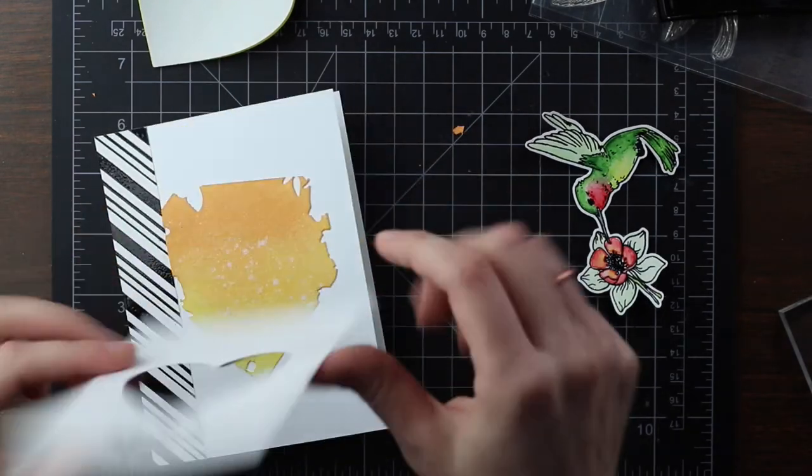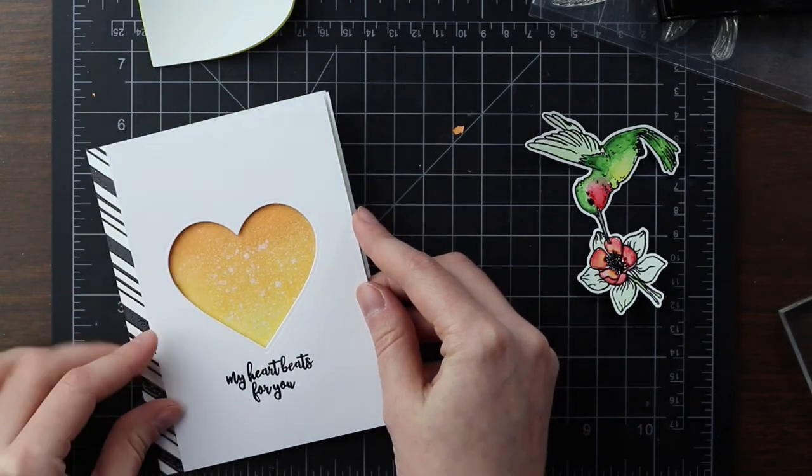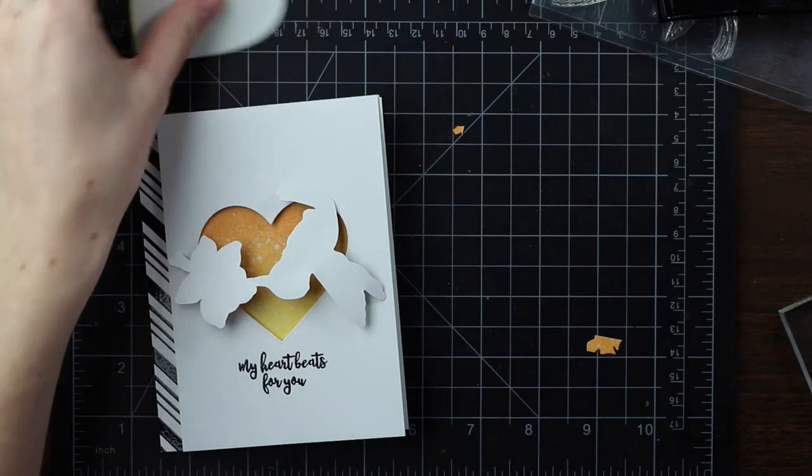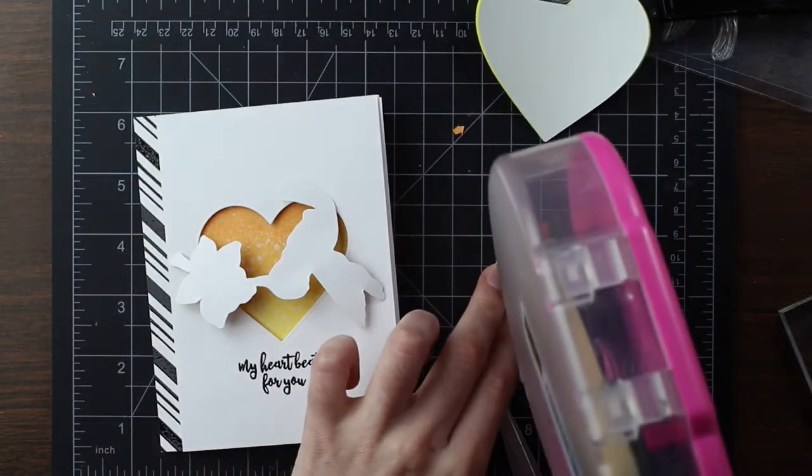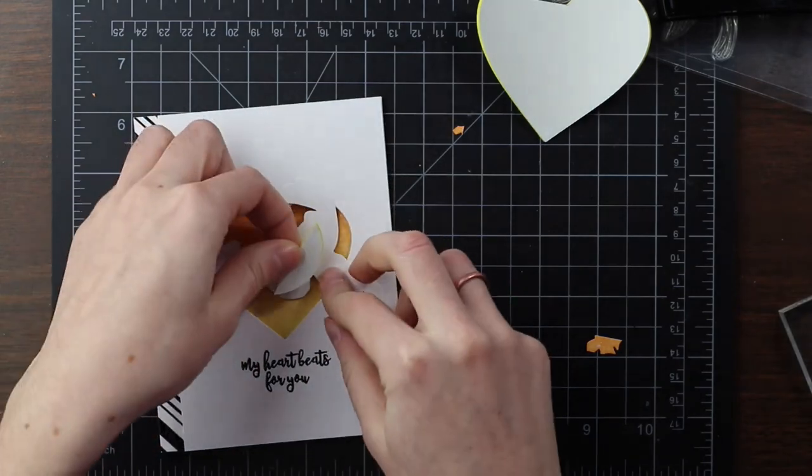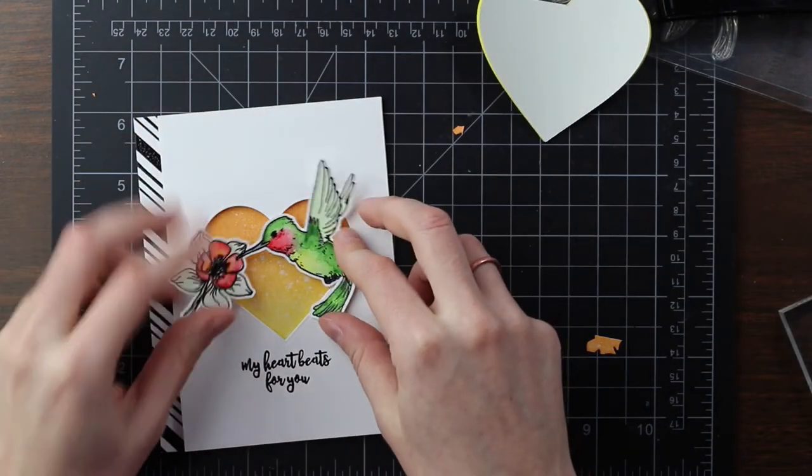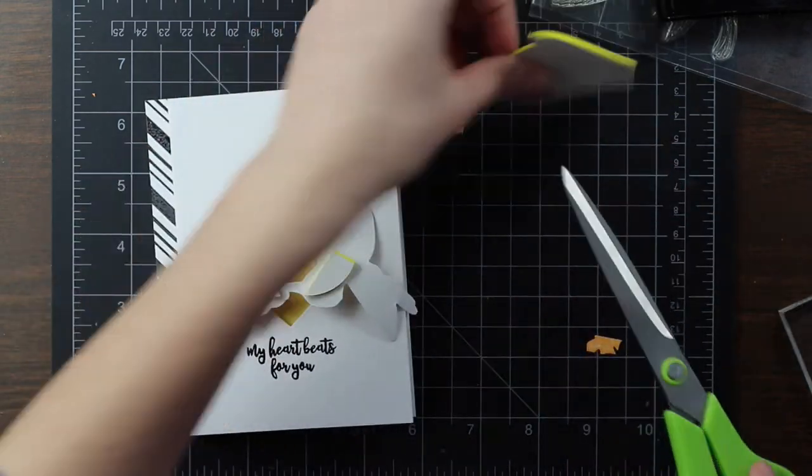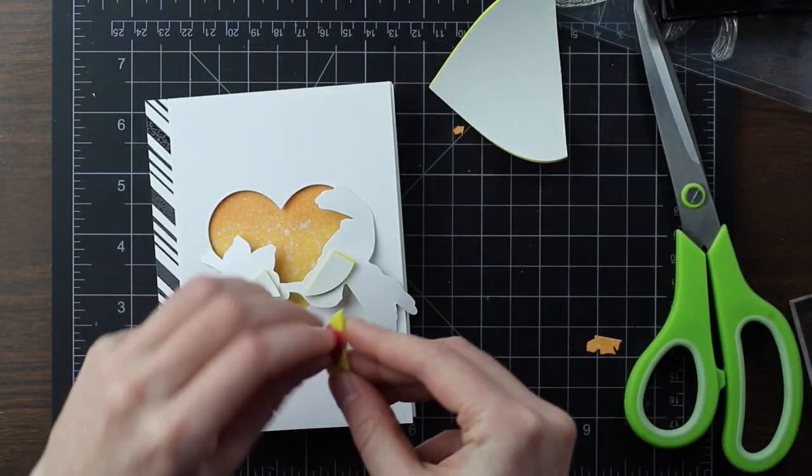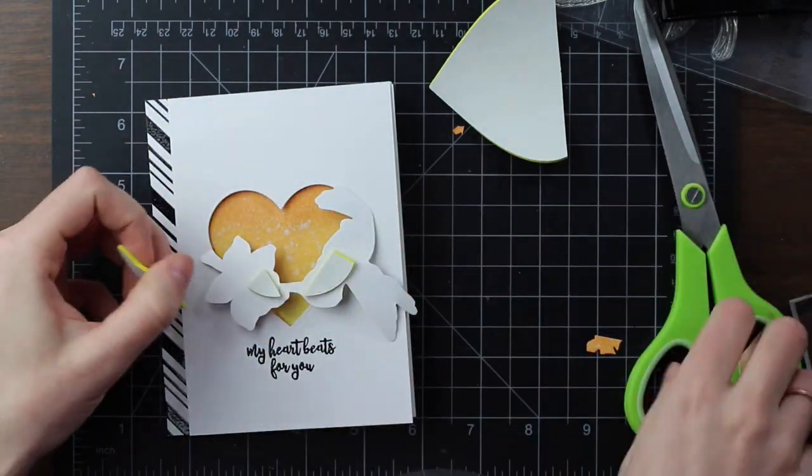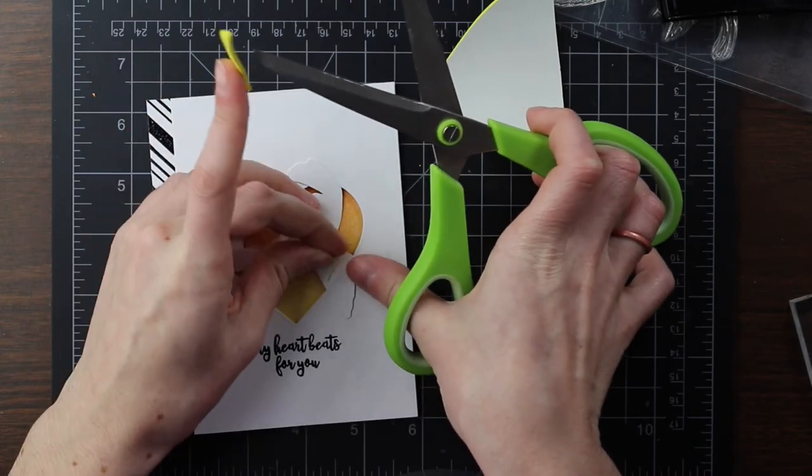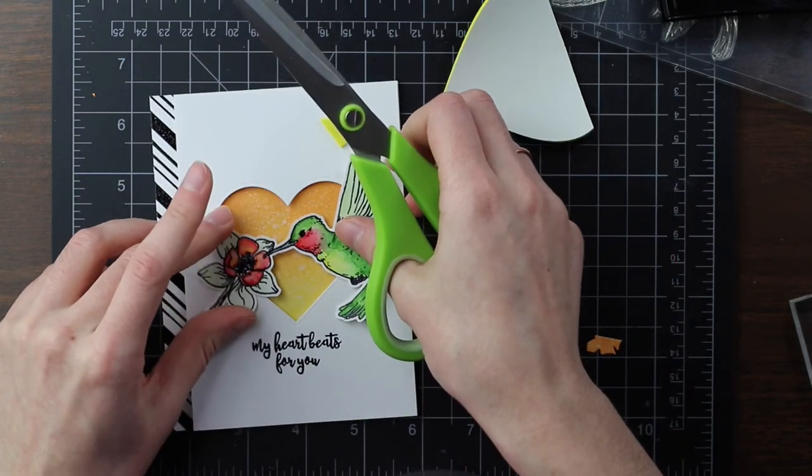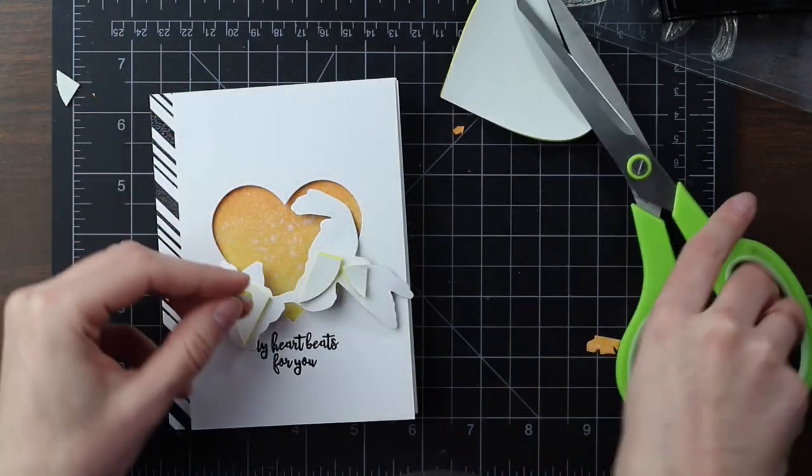And then to adhere my little hummingbird down, I'm going to take that negative from the heart and I'm going to use some of that foam to add some adhesive behind the hummingbird that's going to be popping up. If I just added adhesive, like normal adhesive to the wings and maybe the little edge of the flower that are actually going to be sitting flush with the white card base, then the center, that little hummingbird's head and little beak is going to get pressed down into the heart. I want that to pop up. So I'm just using some of that extra foam and then putting it in those little nooks and crannies.